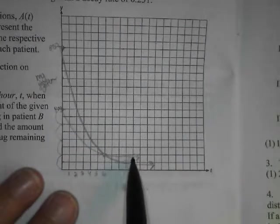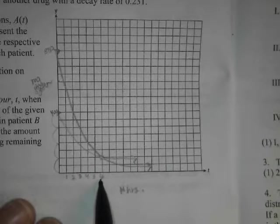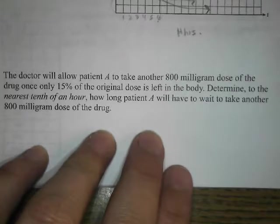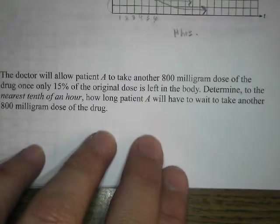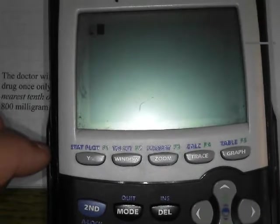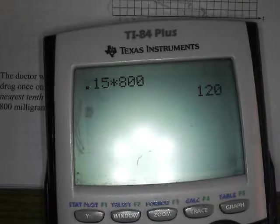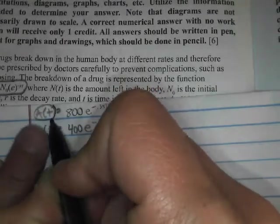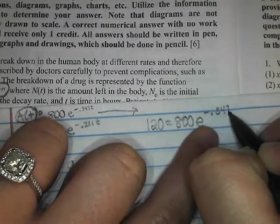And then the last one is a question just regarding patient A. The doctor will allow patient A to take another 800 milligram dose of the drug once only 15% of the original dose is left. Well, what is 15% of 800? 0.15 times 800. So 15% of 800 is 120. So the doctor will allow this person to take another dose once there are only 120 milligrams in their body, a.k.a. 15% of their original amount. So if we go to our A formula, we are trying to find when there are only 120, we said, left. So 120 equals 800 e to the negative 0.347 t. And we solve. This is solving an exponential, so we're going to need to use logs, yes?